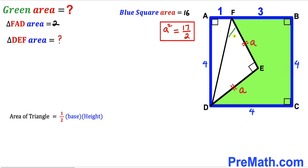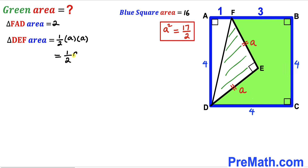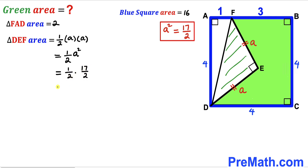Next, let's calculate the area of right triangle DEF using the same formula: area equals one-half times base times height. The base and height are both lowercase a, so the area is one-half times a times a, which equals one-half times a squared. Since a squared equals 17 over 2, the area is one-half times 17 over 2, giving us 17 divided by 4 square units.